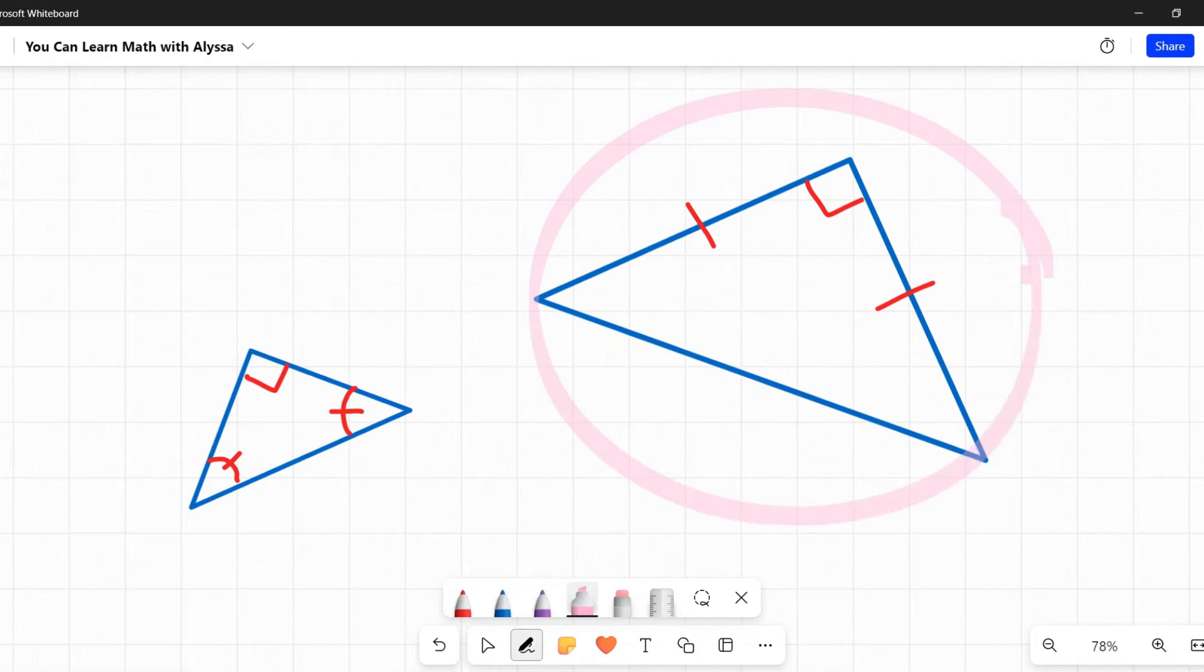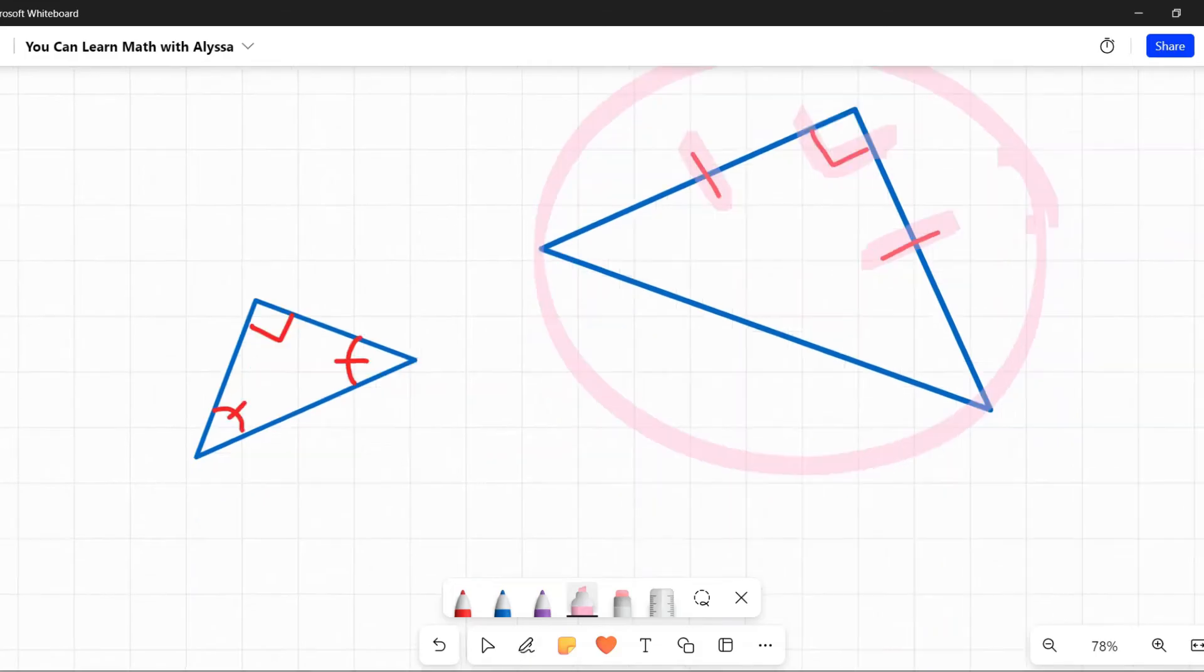Another way they can do it is to show you a right triangle where the two legs are congruent. That is also a 45-45-90 triangle.